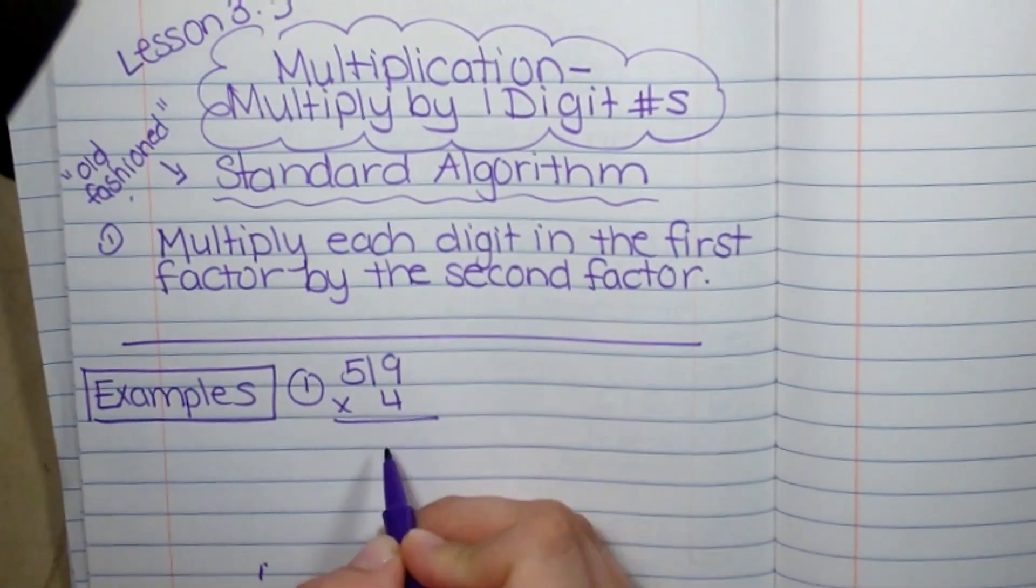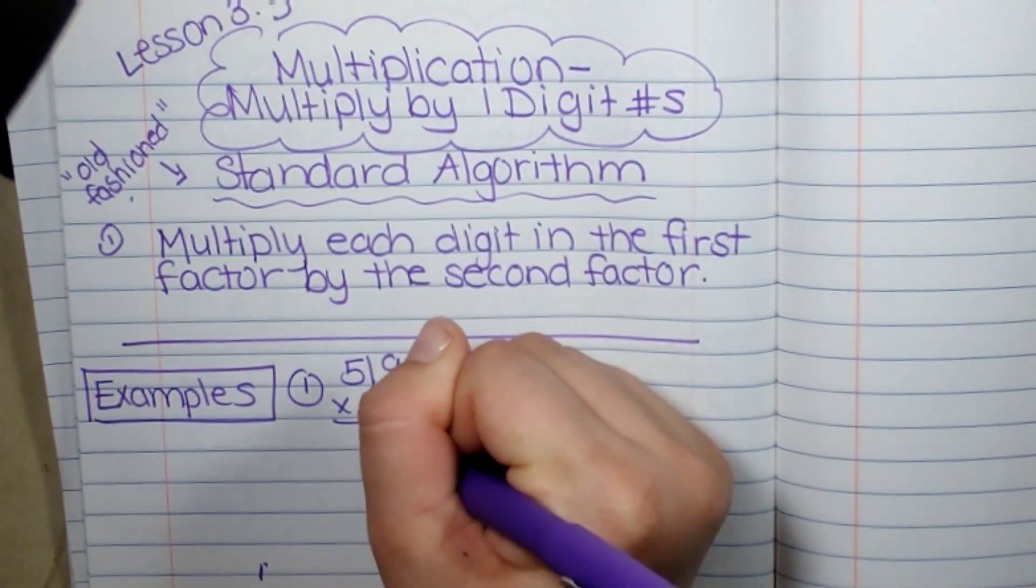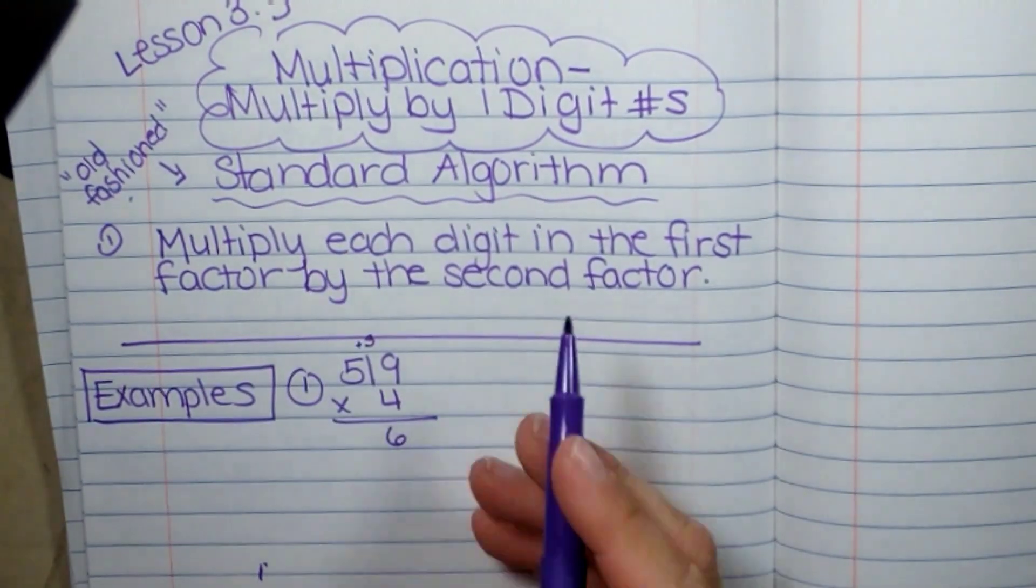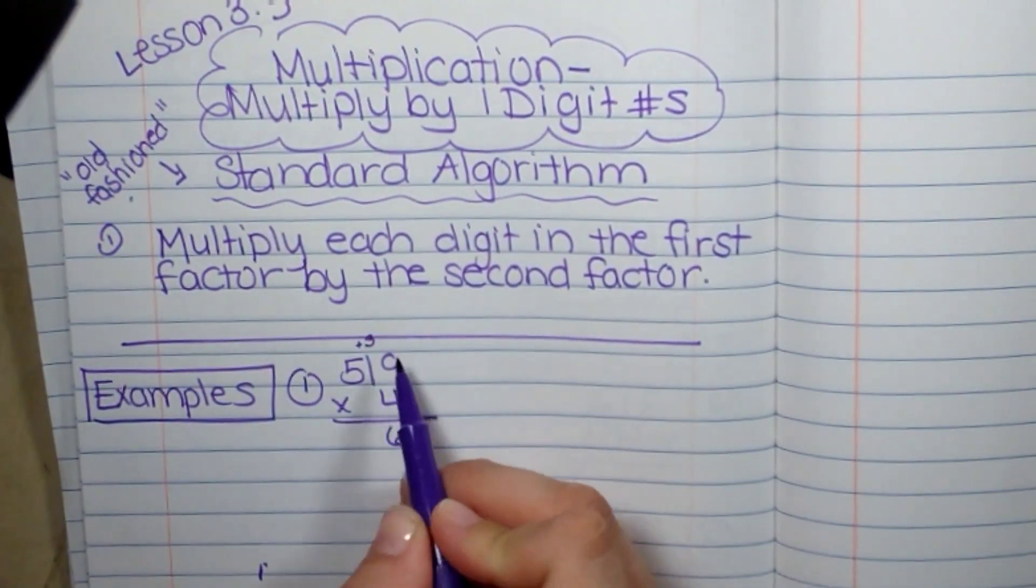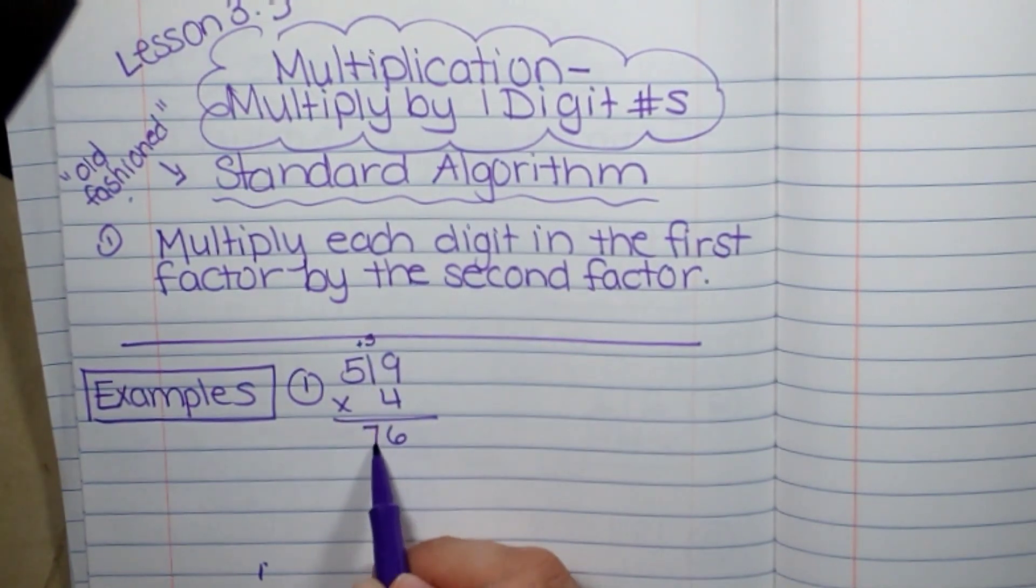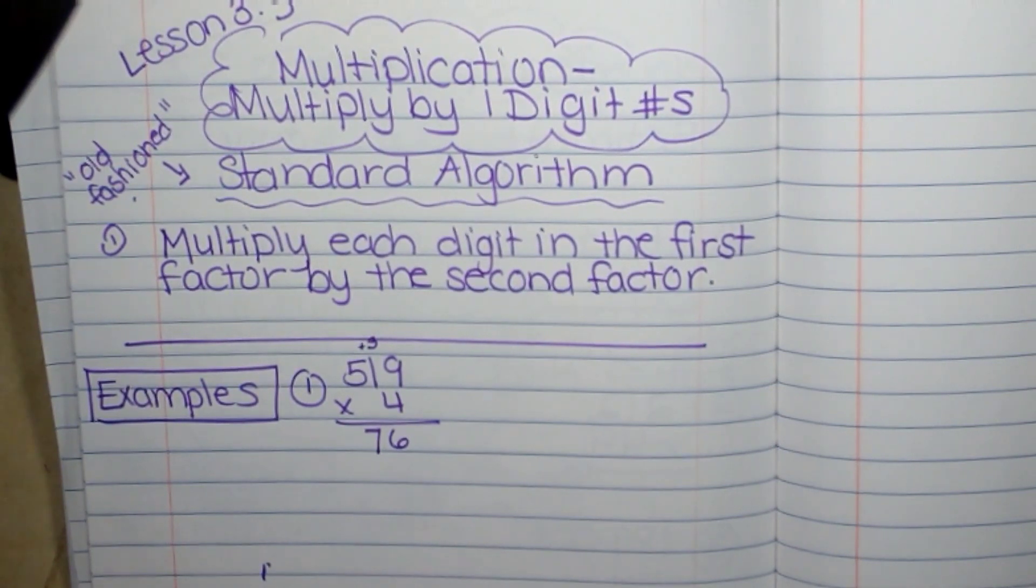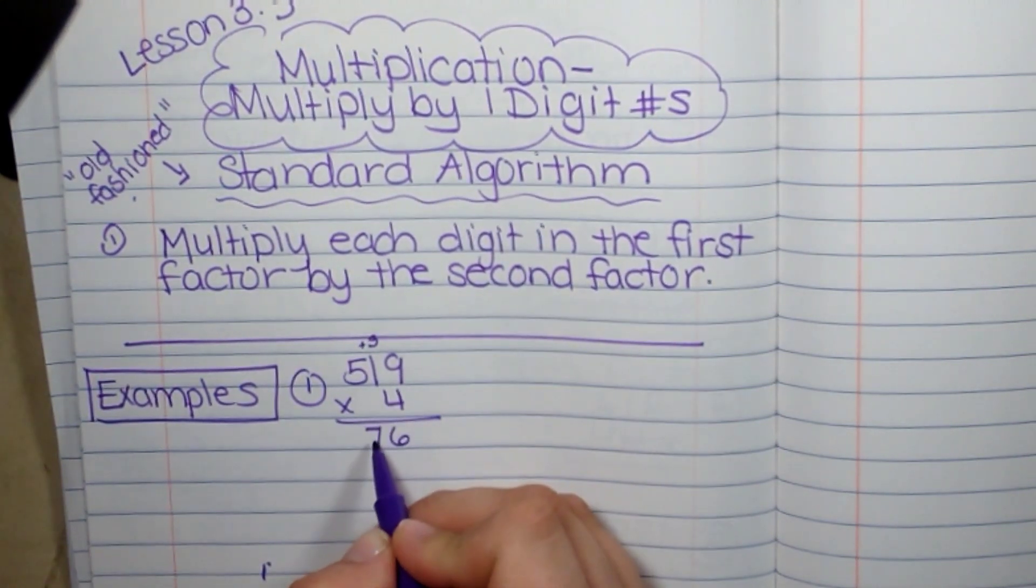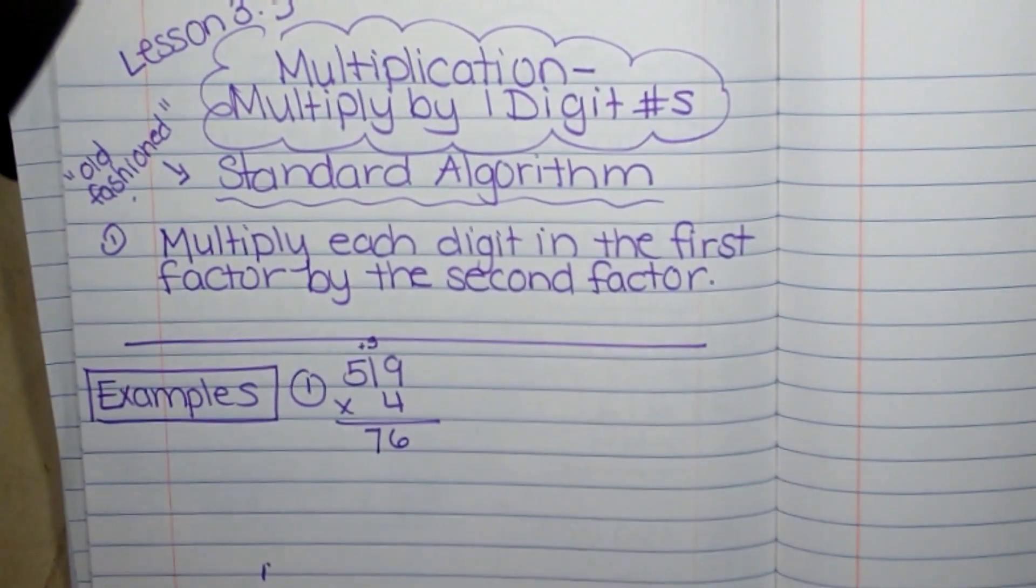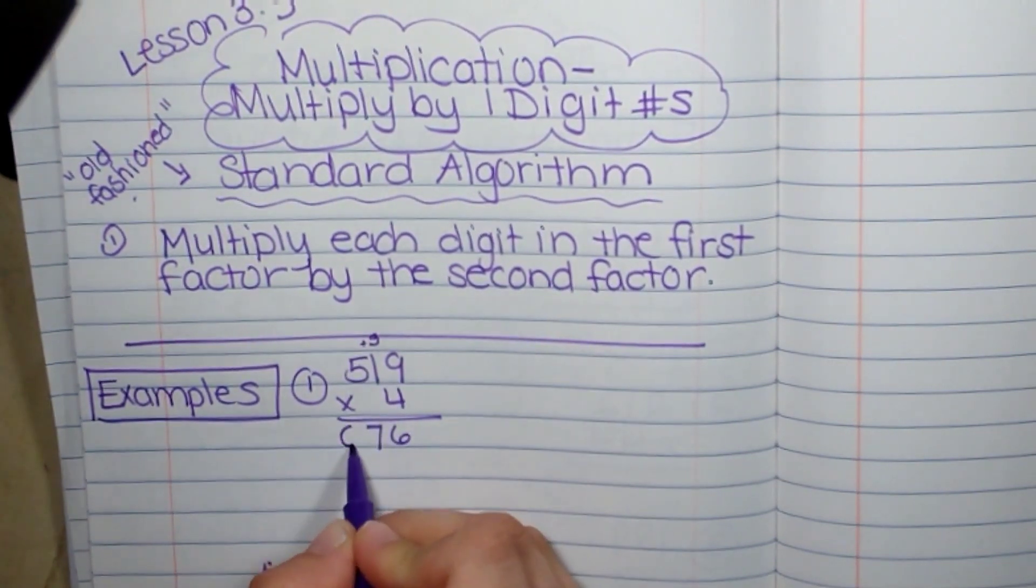So 9 times 4 is 36. I put my ones place here and I carry my tens. So I put plus 3. 4 times 1 is 4, plus 3 is 7. Because this would be 4 tens, but now I have 3 extra tens over there. So it's 7. 4 times 5 is 20.